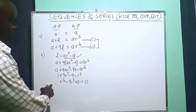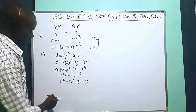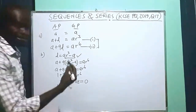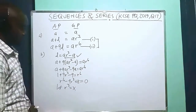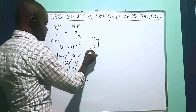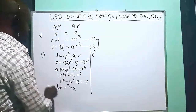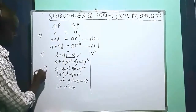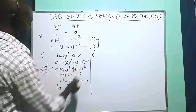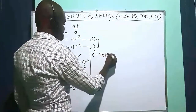We recognise this is in quadratic form. To make that visible, we let R³ equal x. Substituting, R^6 is equivalent to (R³)² which becomes x². Replacing R³ with x throughout, the equation becomes x² minus 9x plus 8 equals 0.